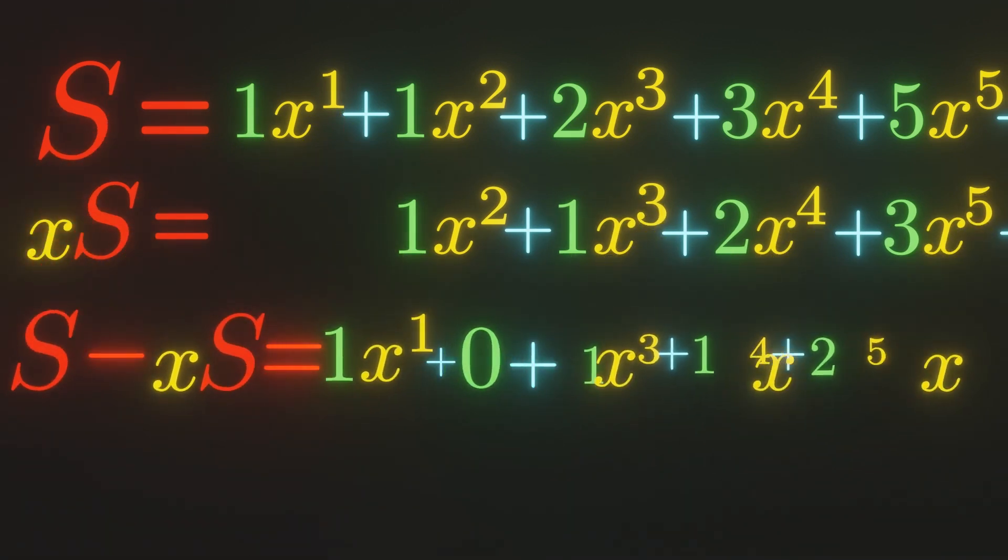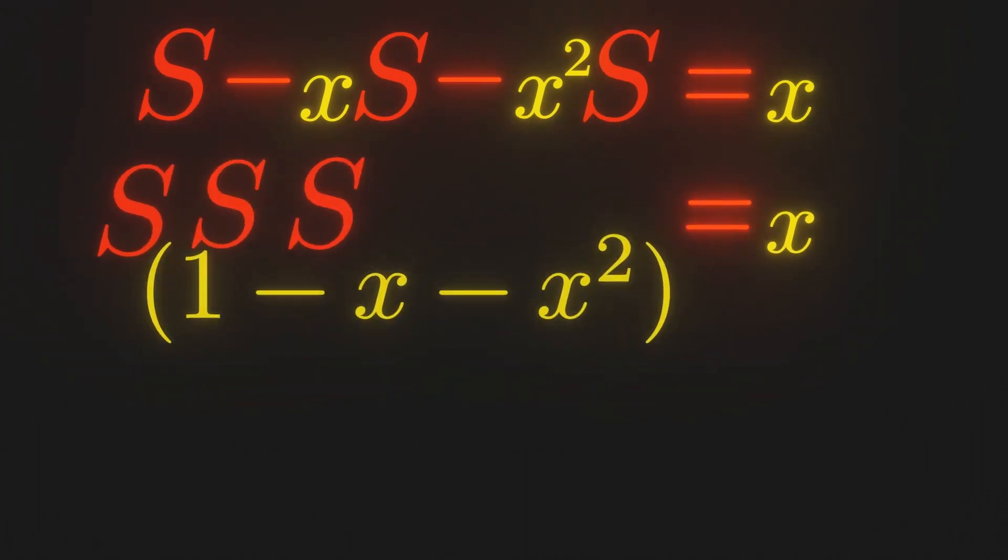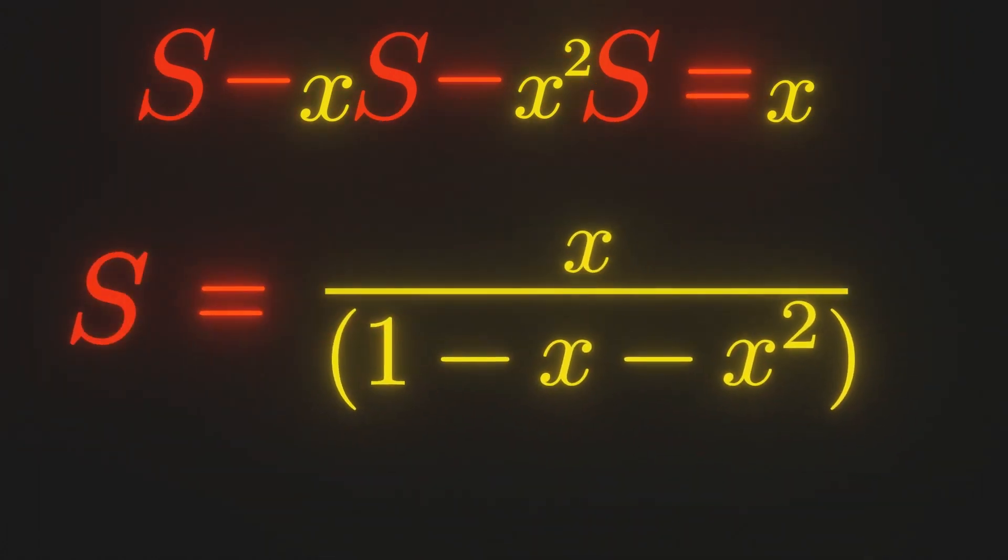After subtracting, we can factor out an x squared, and we notice we have another copy of s. We can solve for s to get that s equals x over 1 minus x minus x squared.